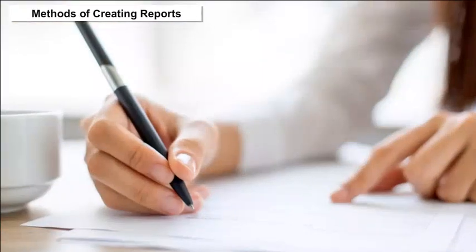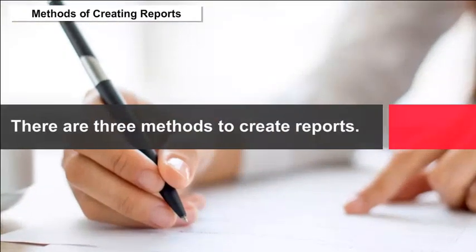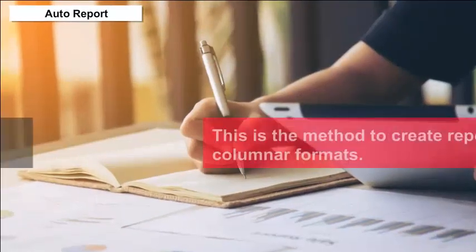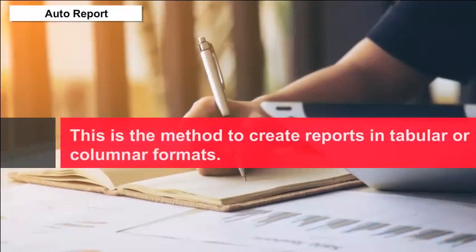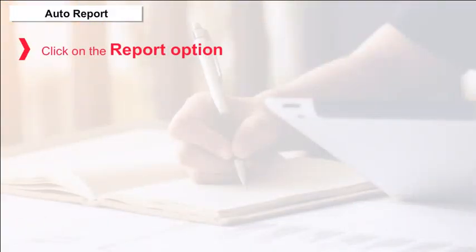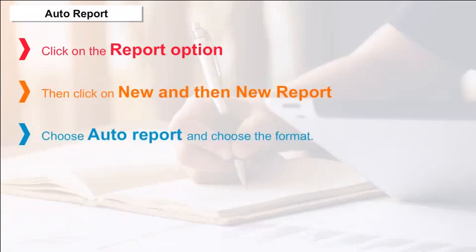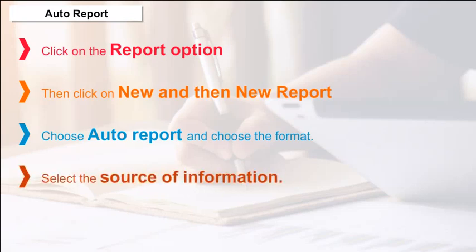Methods of creating reports: Auto Report — click on the Report option, then New and then New Report. Choose Auto Report and the format, select the source of information, and click OK.